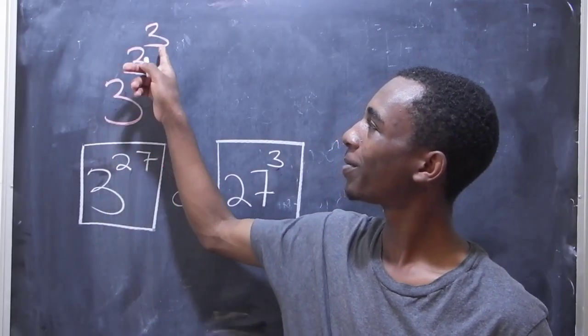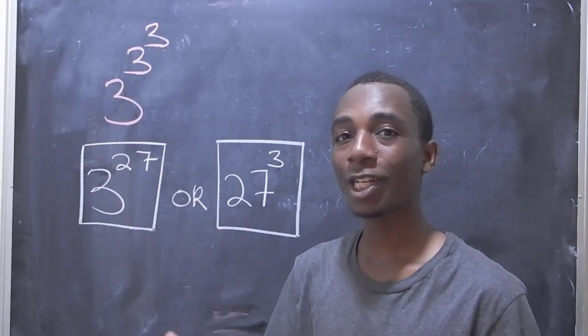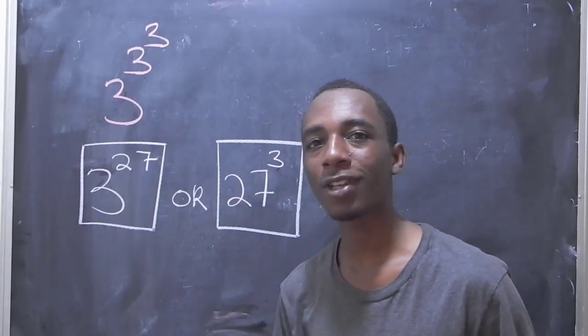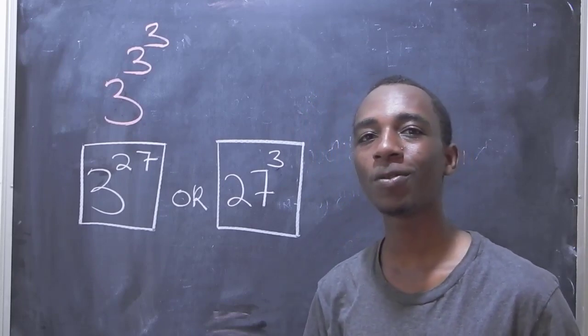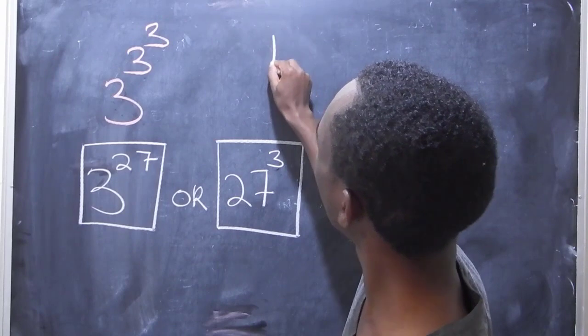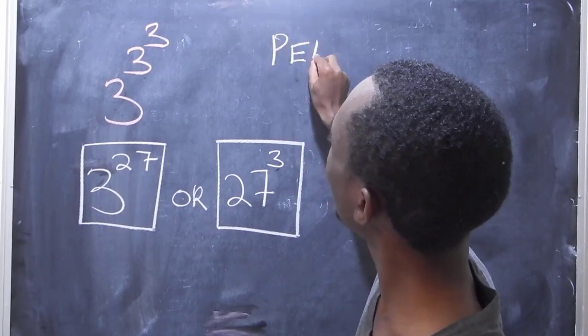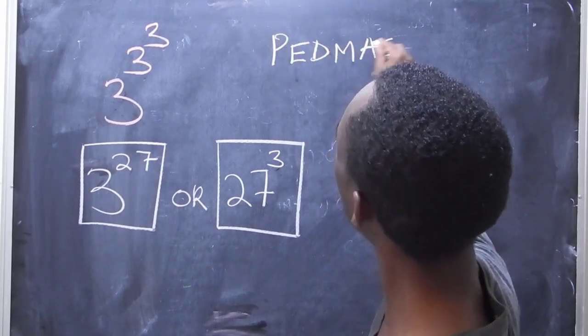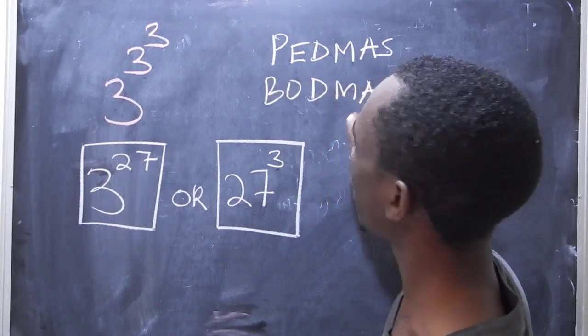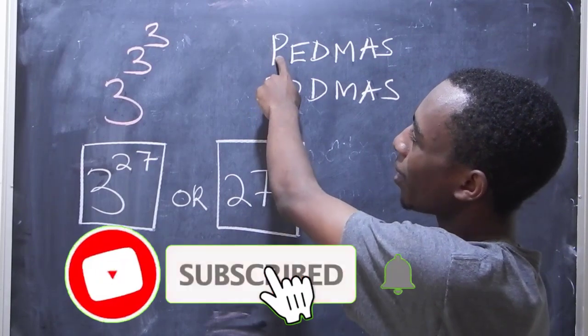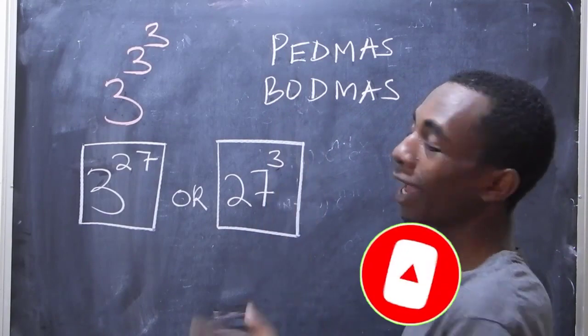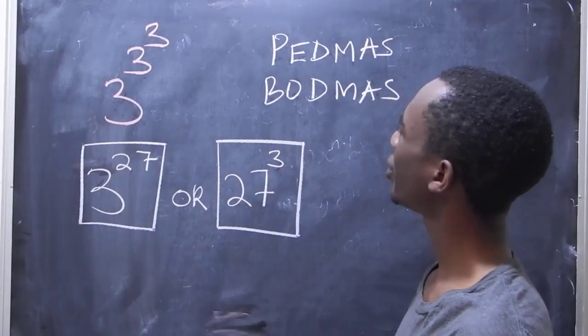Okay, so 3 to the power 3 to the power 3, we are having an exponent appearing twice. So as you know, when we are carrying out an arithmetic operation which involves more than one mathematical operation, we follow the order which we commonly abbreviate as PEMDAS or BODMAS. Okay, where the brackets or the parenthesis take the first priority, followed by the order or the exponents in the expression.